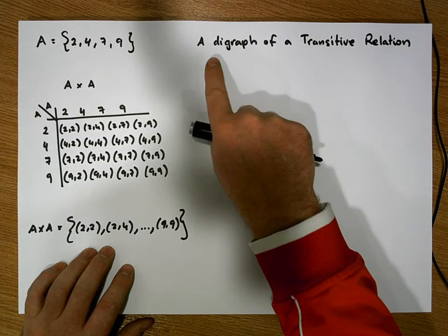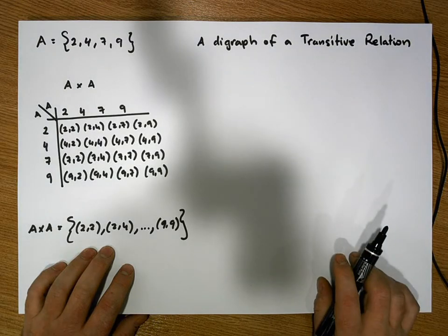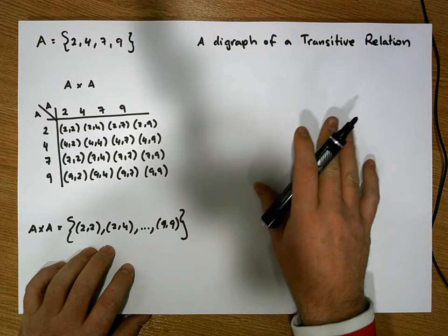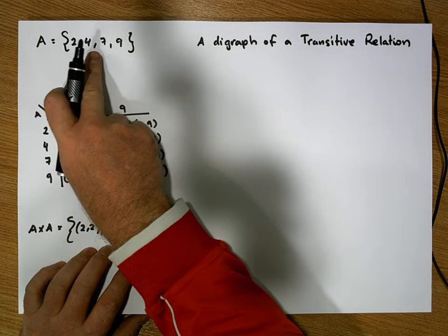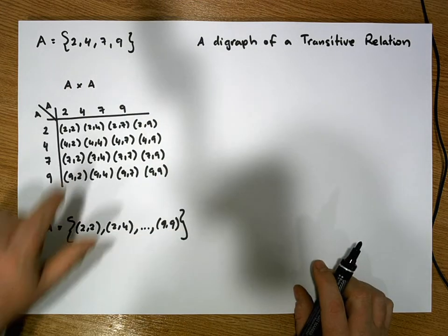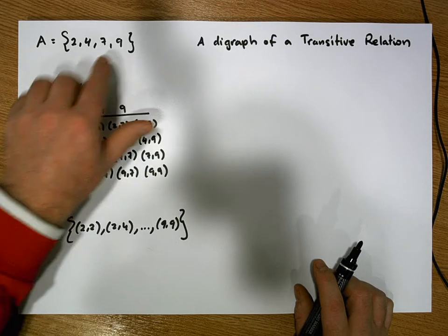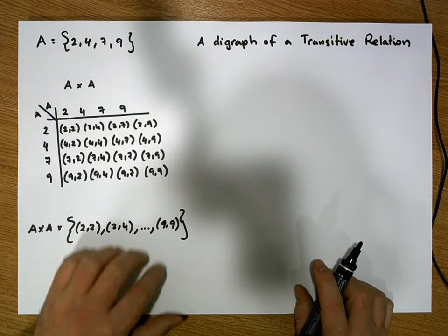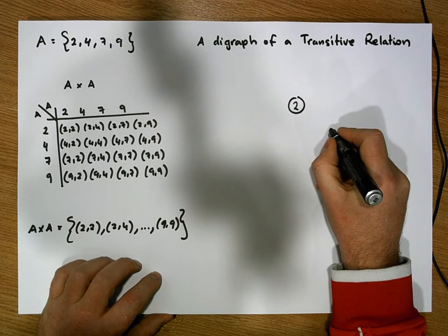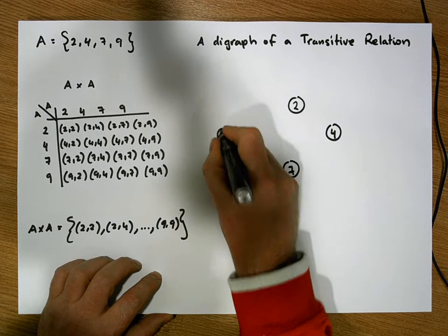In this video we are interested in what a digraph of a transitive relation looks like. Since a relation is built on a particular set, the digraph must contain all of the elements of that set. So let's construct the nodes: there should be a node 2, a node 4, a node 7, and a node 9.